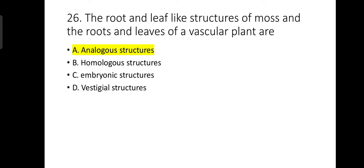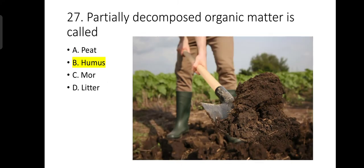Number 26: The root- and leaf-like structures of moss and the roots and leaves of a vascular plant are known as analogous structures. Analogous structures are those which are similar in their function but different in their structure. Number 27: Partially decomposed organic matter is known as humus.